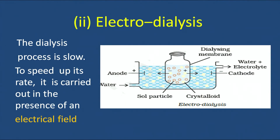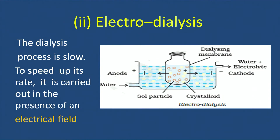The process of dialysis is extremely slow. To make it faster, electrodialysis is used. The basic setup is the same, but two electrodes — cathode and anode — are placed on the two sides of the sol to be purified, and an electric field is applied. In lyophobic colloids, the particles carry charge due to adsorbed ions. Under the electric field, colloidal particles move toward the oppositely charged electrode, while the electrolyte present in the system passes out through the membrane, purifying the colloid.